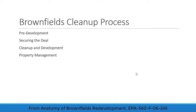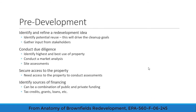We can break the brownfield cleanup process down into four steps: pre-development, securing the deal, cleanup and development, and property management. In pre-development, you figure out what property you want to use and what your development goal is. You conduct site assessments to understand what types of contamination are present, and you determine how you're going to finance the project. This is all the background research required before you can start designing and redeveloping the site.